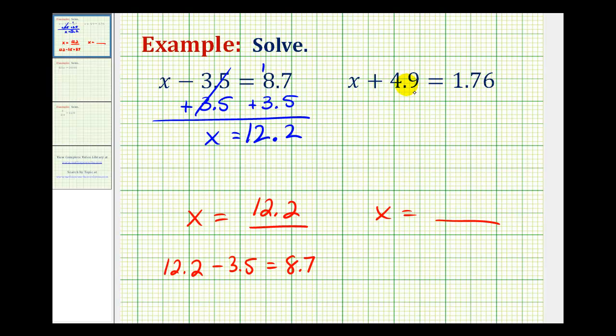So we don't want this plus 4.9 here, or we want to undo plus 4.9. So we'll have to subtract 4.9 on both sides of the equation. Again, making sure we line up the corresponding place values.